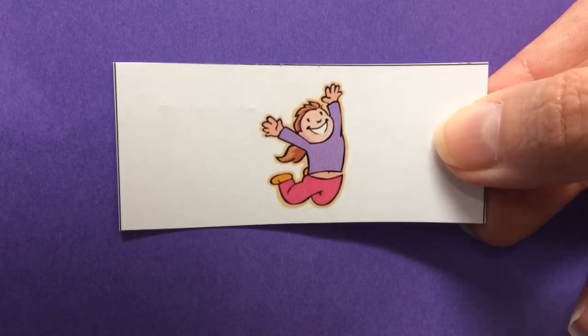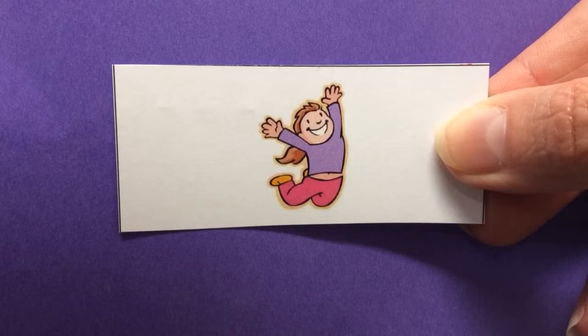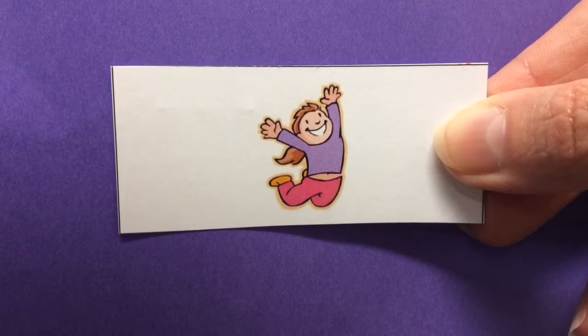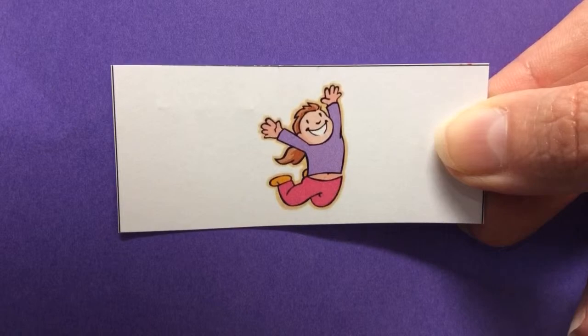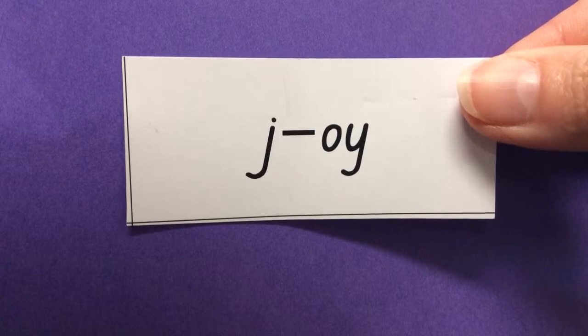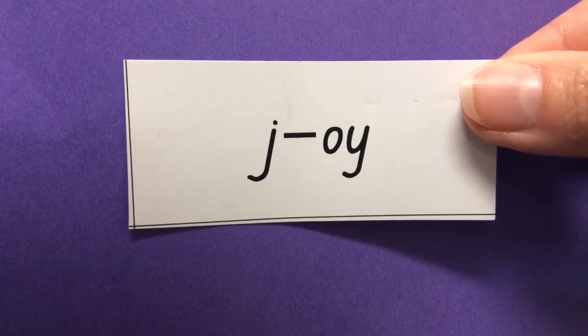And last one. Joy. I am jumping for joy as I'm very happy. Joy. This girl looks really happy, doesn't she. She's jumping for joy. And there it is. Joy. Just two sounds again. How did you go?